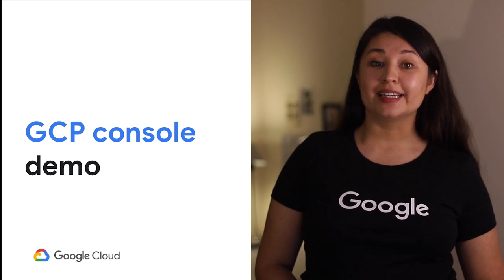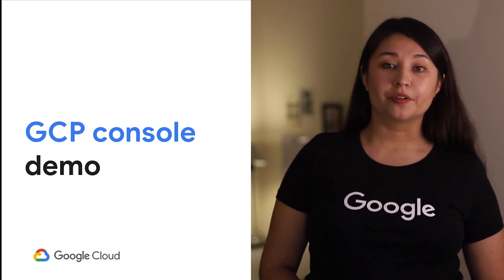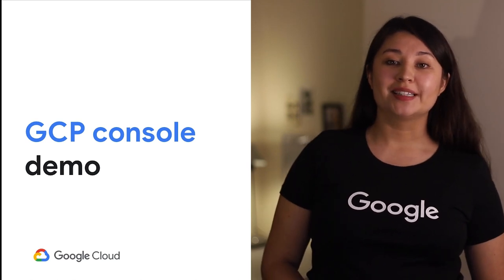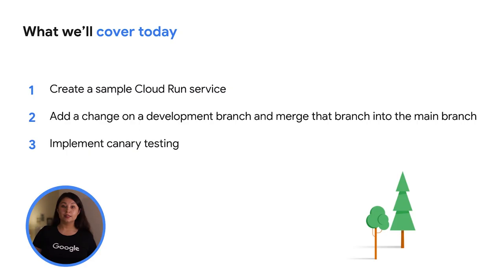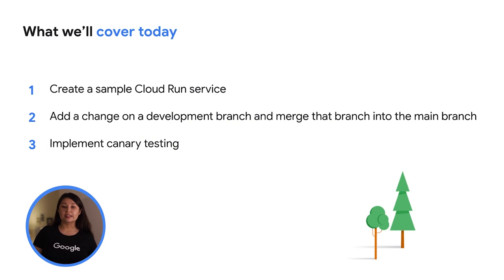Now let's take a look at how we can create a deployment pipeline for Cloud Run that implements progression of code from developer branches with automated canary testing in Google Cloud Platform. Cloud Run lets you deploy and run your applications with little overhead or effort. Check out the Cloud Run video in the description box below for a quick overview of Cloud Run and other compute services available in Google Cloud Platform. In this demo, we will create a sample Cloud Run service, add a change on the development branch, merge that branch into the mainline branch, and implement canary testing to roll out the new change to the Cloud Run service.